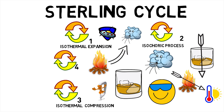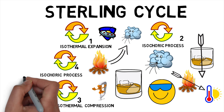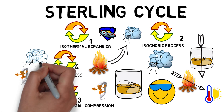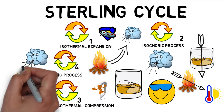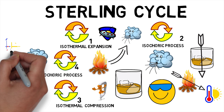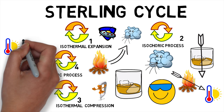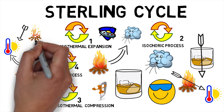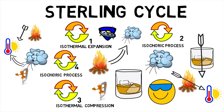Process 4 is again an isochoric process. The compressed air flows back through the regenerator and picks up heat on the way to the heated expansion space, completing the cycle.